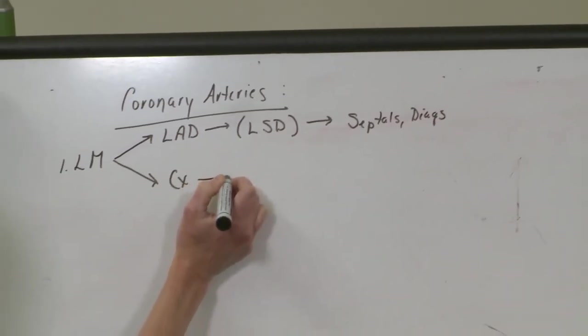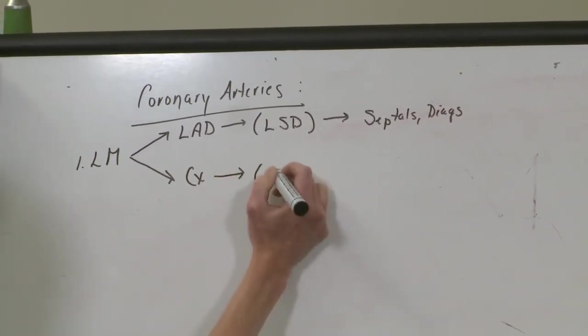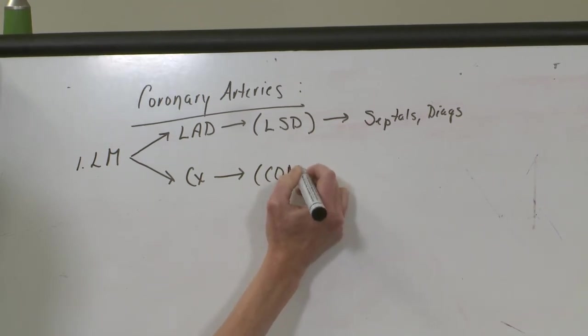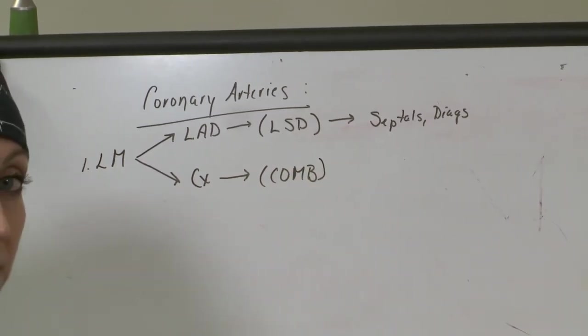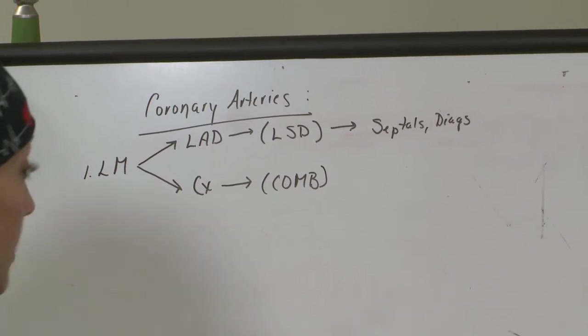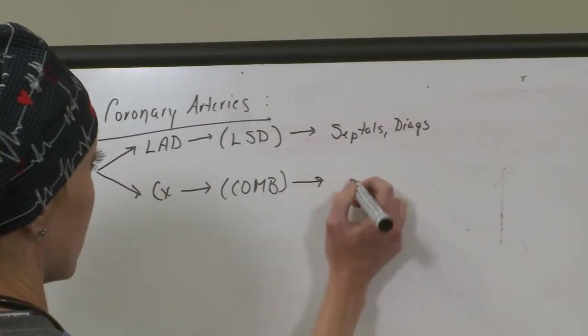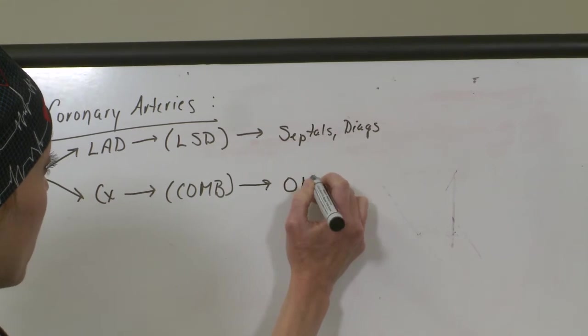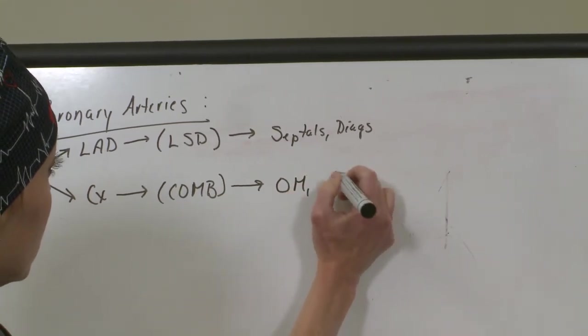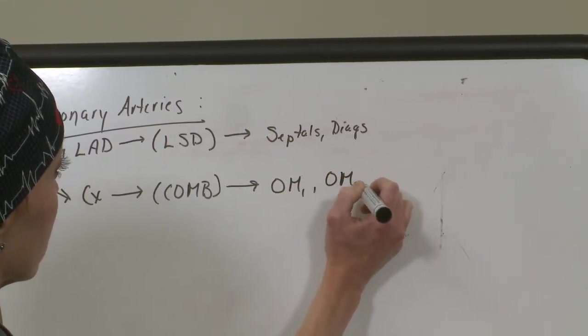Off your circumflex, I want you to remember COMB. So off of your circumflex comes your obtuse marginal branches. So you'll often hear the surgeons talk about OM1, OM2, OM3, etc.